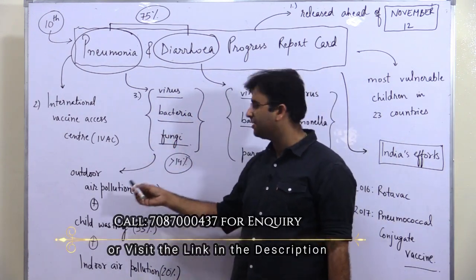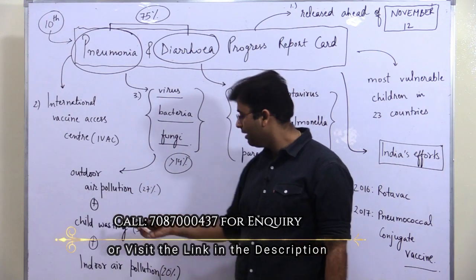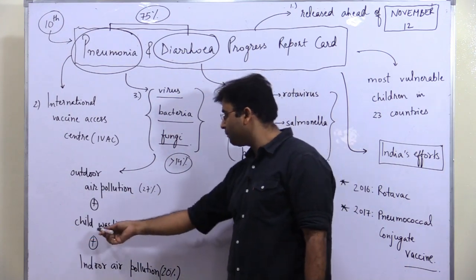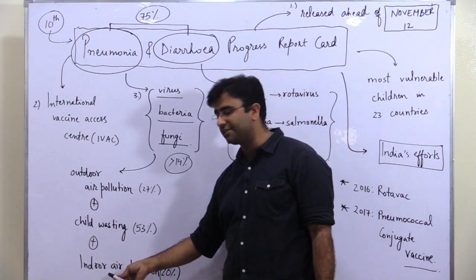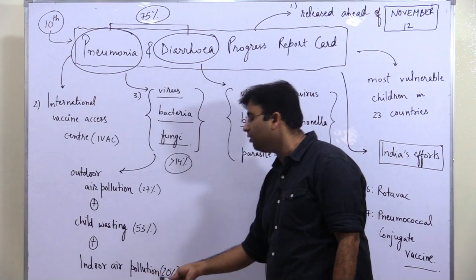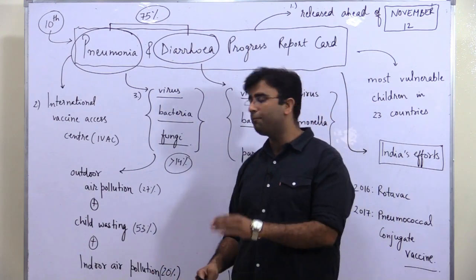53% of cases of pneumonia are because of child wasting, and 20% of pneumonia cases are because of indoor air pollution. It's very important to remember that these three are the leading causes of pneumonia in India.